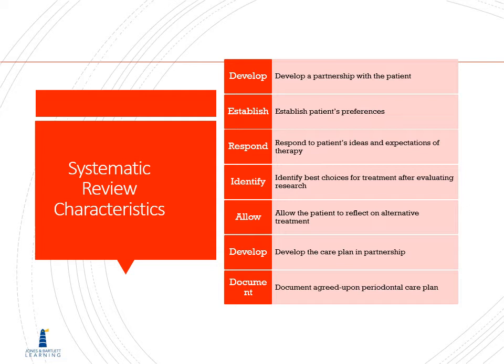Identify the best choices for treatment after evaluating the research. Allow the patient to reflect on alternative treatments — this is what I recommend, my professional opinion, and here are your other options: A, B, or C. They always have the option to not have treatment. Develop the care plan in partnership: 'This is what I think we should do — what would you like to do?' And then document that agreed-upon periodontal care plan.